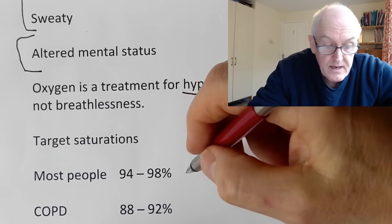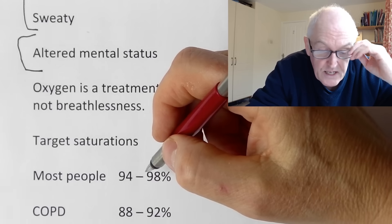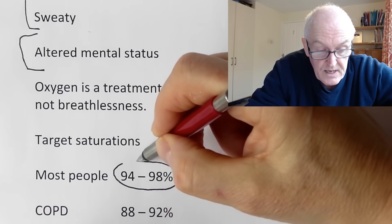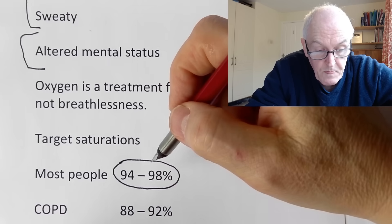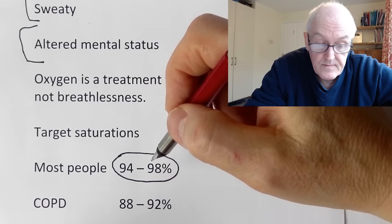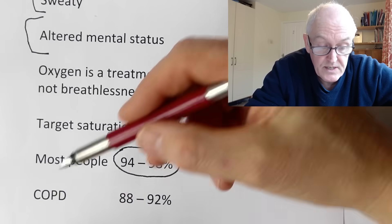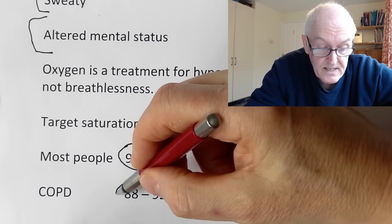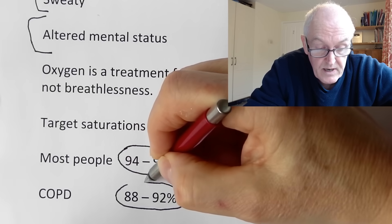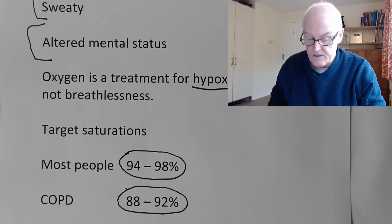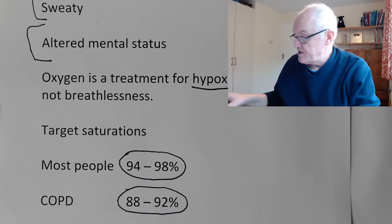These are the target saturations we aim for. For you and me normally, I would like your saturations to be 94 to 98%, which is absolutely fine. Unless you've got chronic lung disease, chronic obstructive pulmonary disease, these people are chronically short of oxygen, so there we accept 88 to 92% as being the normal levels. Very simple test you can do at home to measure for oxygen saturations.